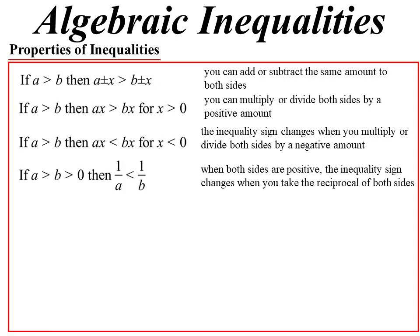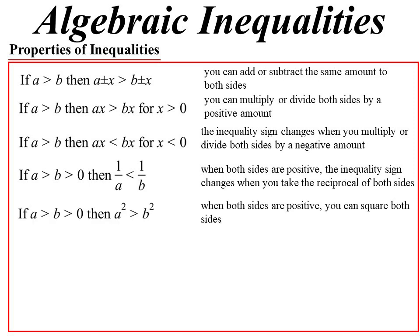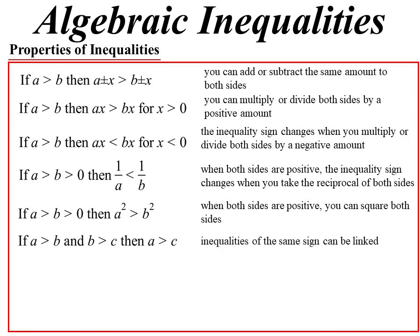Reciprocals: if you take the reciprocal of both sides, then the inequality sign will change. If you square — and this one is important that we're talking about positives, because it's not true with negatives — if you square both sides, the inequality is preserved. And if A is greater than B and B is greater than C, then logically A must be greater than C. So inequalities with the same sign can be linked together.